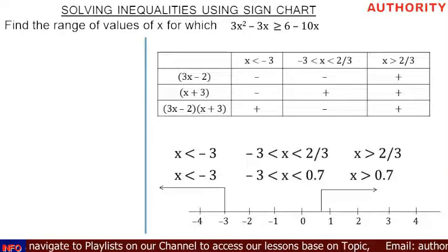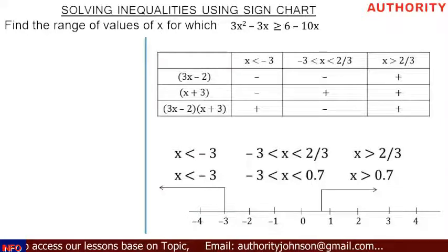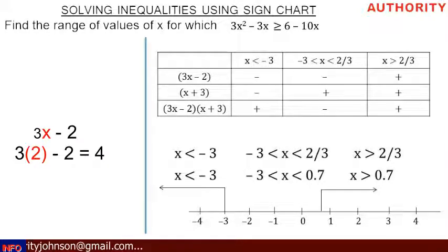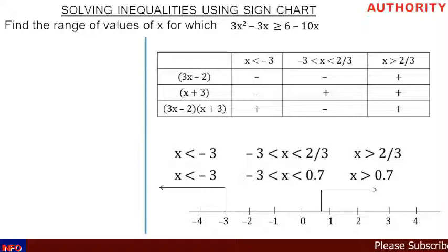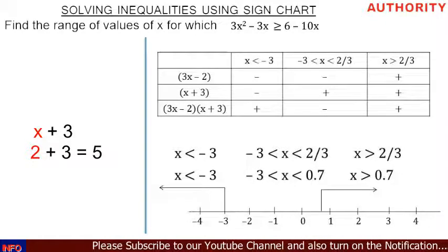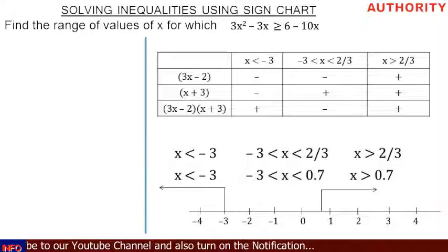For the third range, x greater than 2 over 3, let's pick 2. Placing 2 into 3x minus 2: 3(2) − 2 = 6 − 2 = 4, which is positive. Placing 2 into x plus 3: 2 + 3 = 5, which is positive. So under the product: plus times plus equals plus. The product is positive in this range.